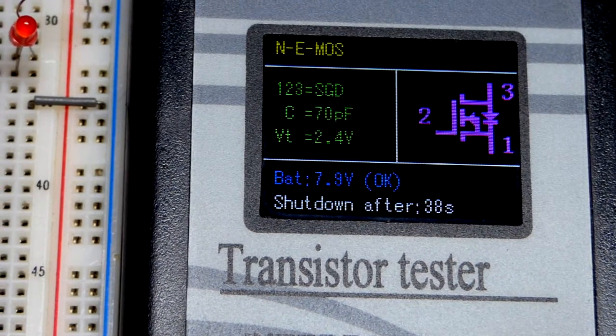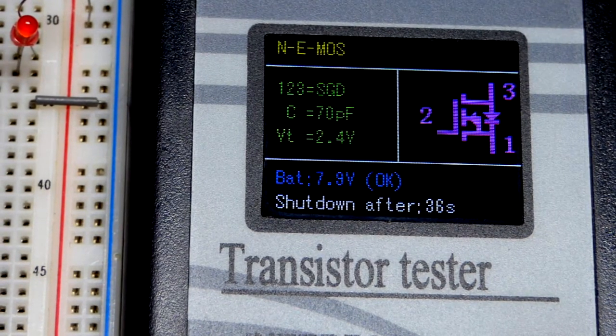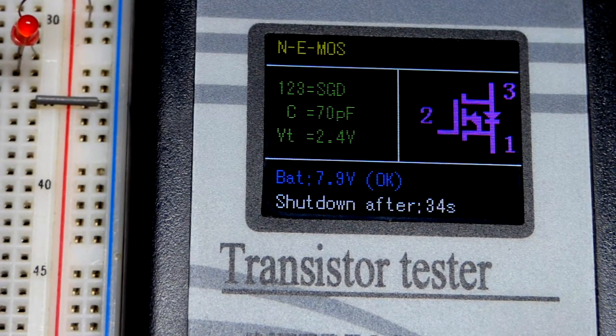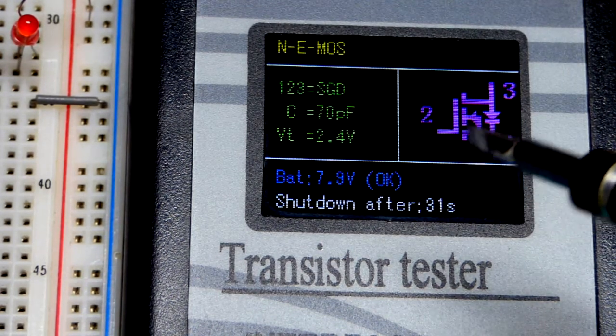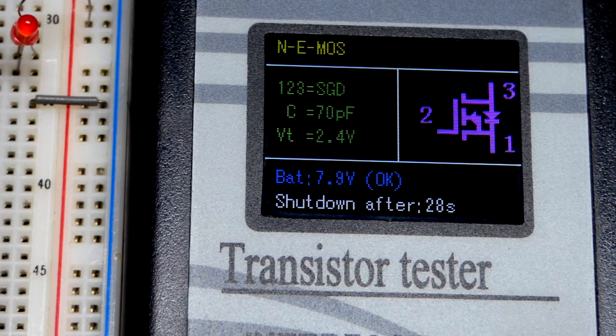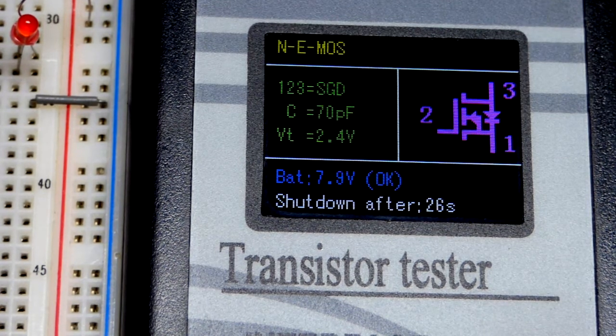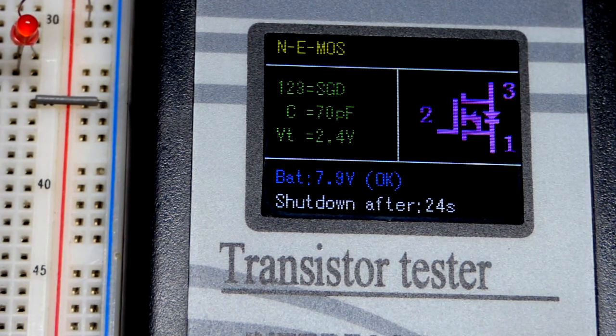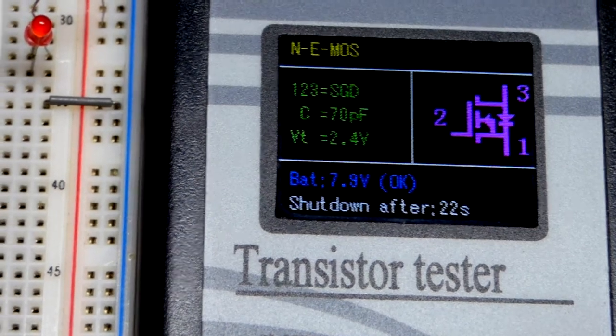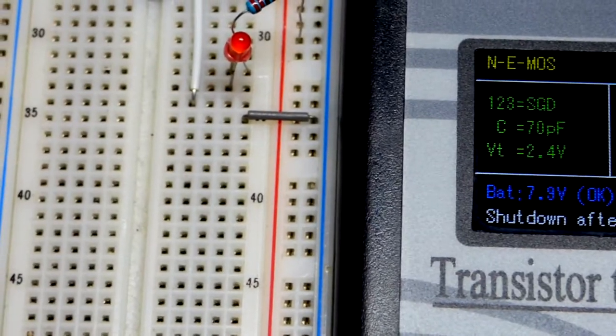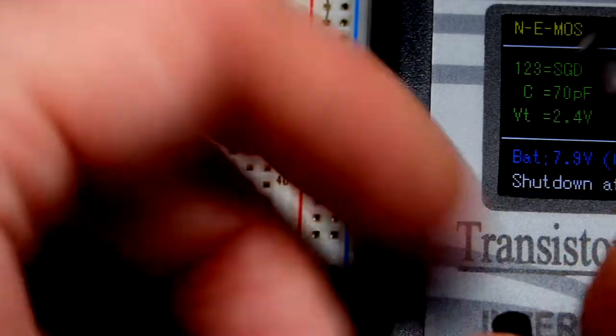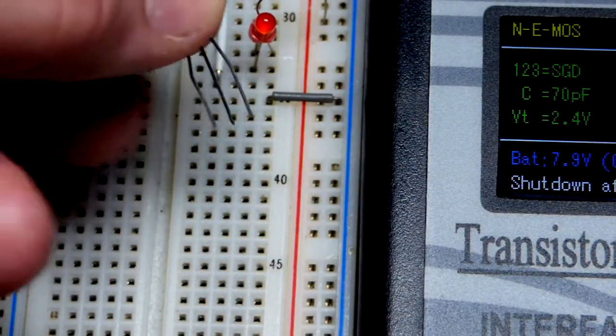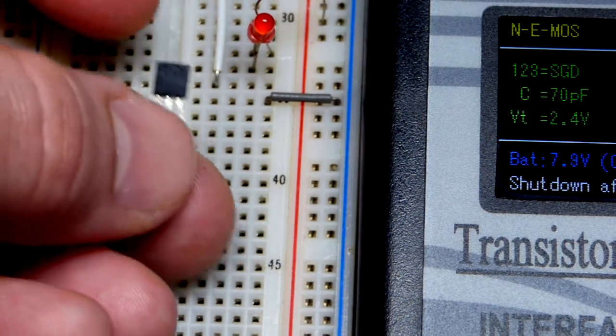We have a schematic diagram here and we have the pin layout. So pin number 1 is the source, pin number 2 is the gate, and then pin number 3 is the drain. We are going to be making a switch circuit, so the drain needs to be more positive than the source. As we can see there, the drain is pin number 3, that's the pin to the right when you are looking at the flat side.